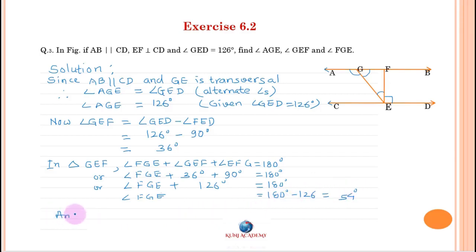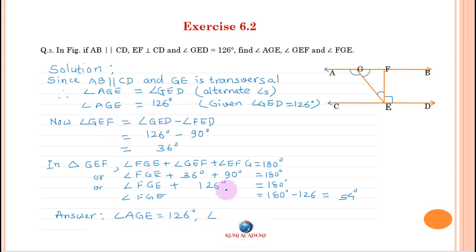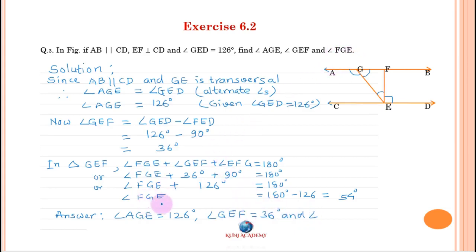Answer: Angle AGE equals 126 degrees. Angle GEF equals 36 degrees. And angle FGE equals 54 degrees.